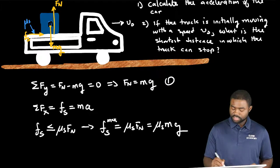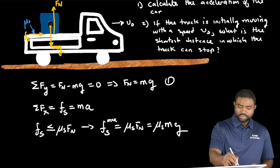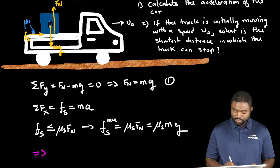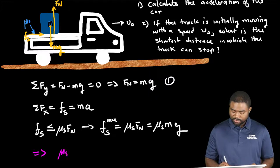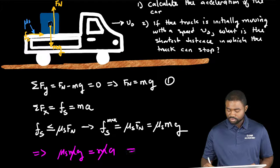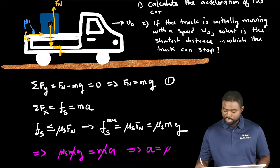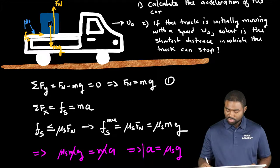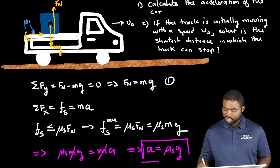Hence if that is the case, we can say that mu s mg is equal to ma. The m's can cancel, which means that the acceleration of the box is just going to be equal to mu s g, which is also the acceleration of the truck.